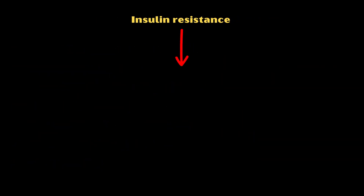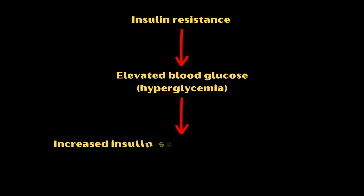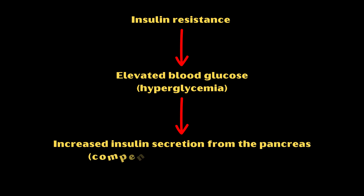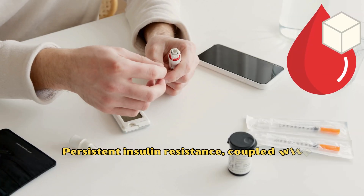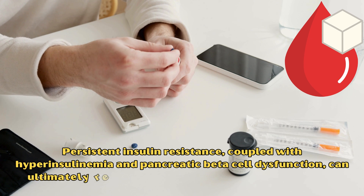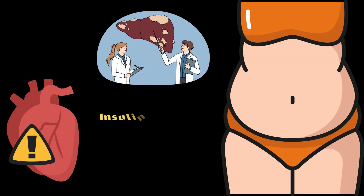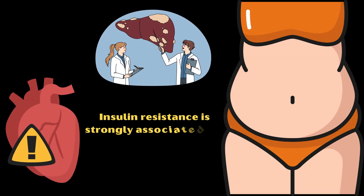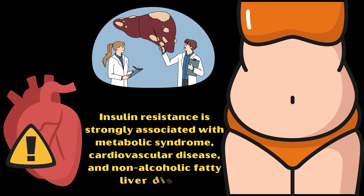Insulin resistance can lead to elevated blood glucose levels or hyperglycemia. To combat this, the pancreas secretes more and more insulin, leading to higher insulin levels than usual, which is known as compensatory hyperinsulinemia. Persistent insulin resistance, coupled with hyperinsulinemia and pancreatic beta cell dysfunction, can ultimately result in the development of type 2 diabetes. In addition, insulin resistance is strongly associated with metabolic syndrome, cardiovascular disease, and non-alcoholic fatty liver disease.